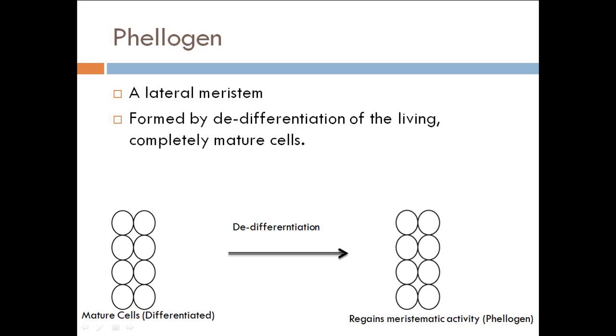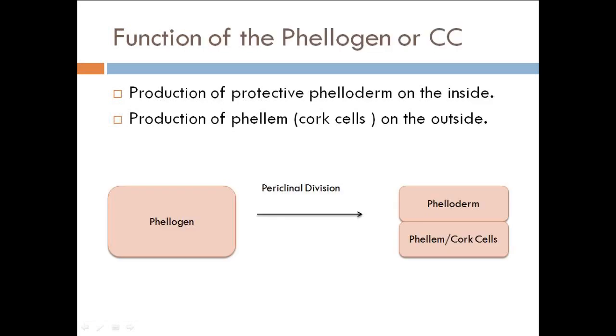Coming on to the function: the function of phellogen or cork cambium is the production of protective phelloderm on the inside and production of phellem or cork cell on the outside with the help of periclinal division. Note the term periclinal. It's just two types of division and the angle varies. Here it is periclinal and anticlinal. So phelloderm on the inside and phellem or cork cells on the outside.